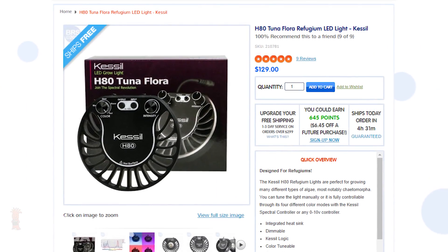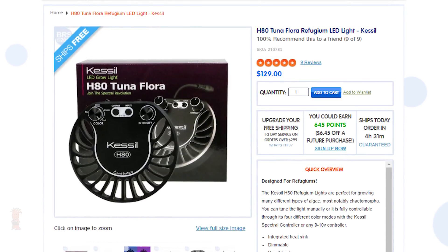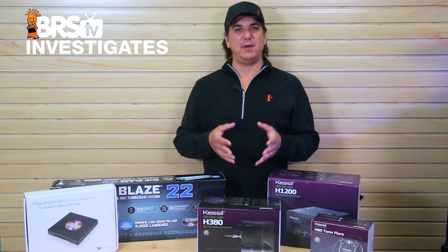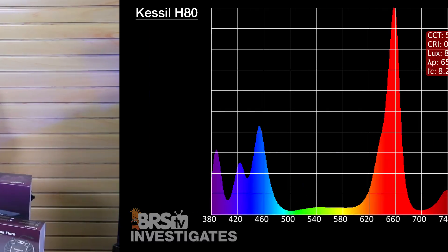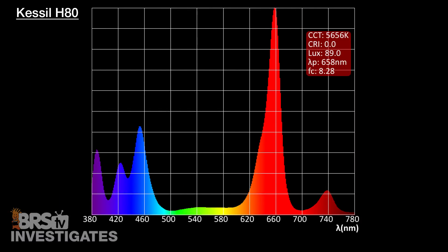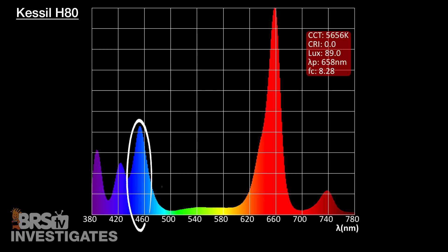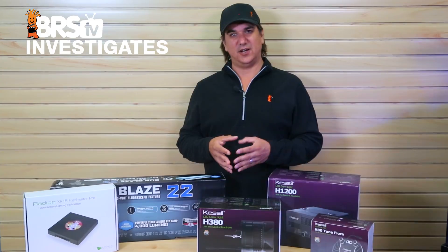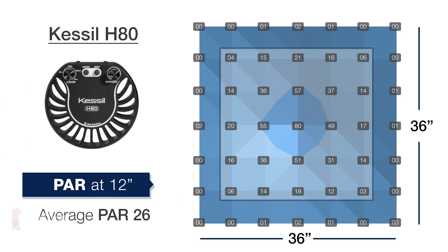Starting with the $129 Kessil H80 — it looks sharp and its low profile might be attractive for some installations, but dollar for dollar it is probably the most costly option from a perspective of dollars spent to PAR produced. That said, looking at the H80 spectrum you can see the light peaks almost dead on the optimal 662 nanometers and just a few points off the 429, which is ideal for chlorophyll A. This is also almost dead on the 455 peak and in a thick band at 642 — there is no question this light was very obviously designed for horticulture and growing plants. At 13.5 watts and a mounting height of 12 inches we are seeing an average PAR of about 26 with a peak of 80 in the center.